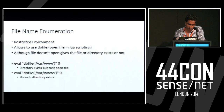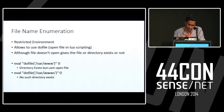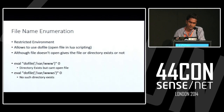File name enumeration is possible when testing in restricted environments. The io.open function can be used in Lua scripting to open files. Although it doesn't actually open the file, it gives an indication of whether the file exists or not. If I try evaluating a valid file path, it outputs 'file exists but cannot open file.' If I specify a non-existent path, it says 'no such file.' So you can do a blind file enumeration attack. This has been added to the framework.